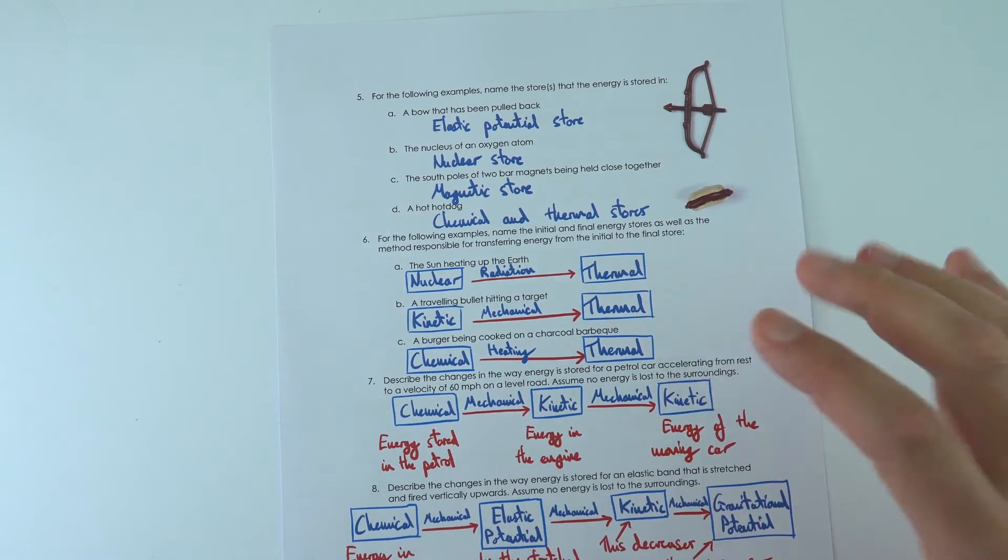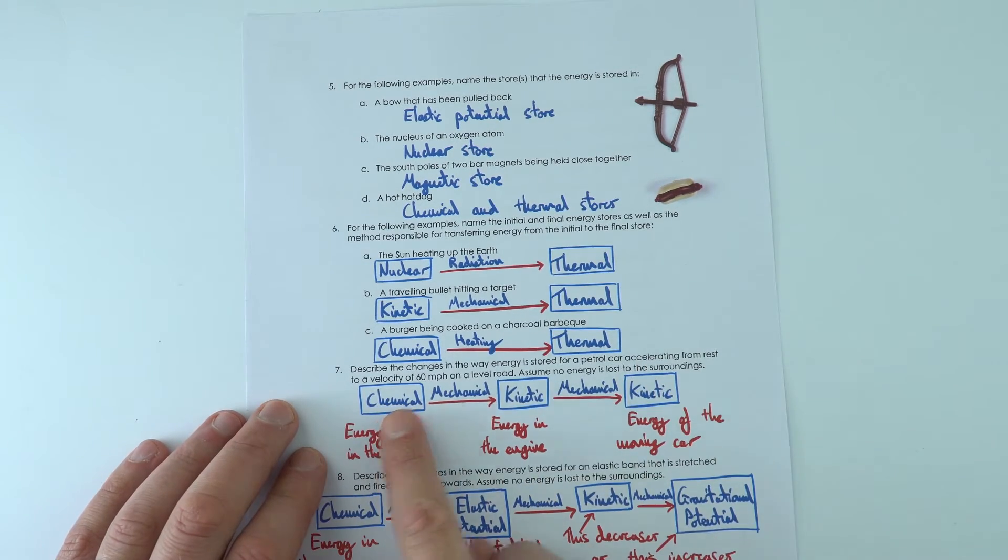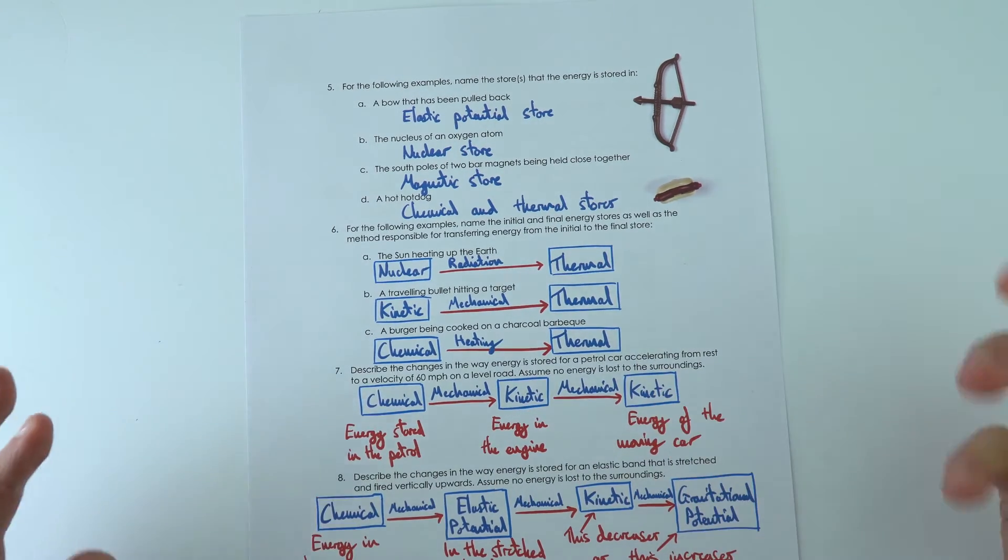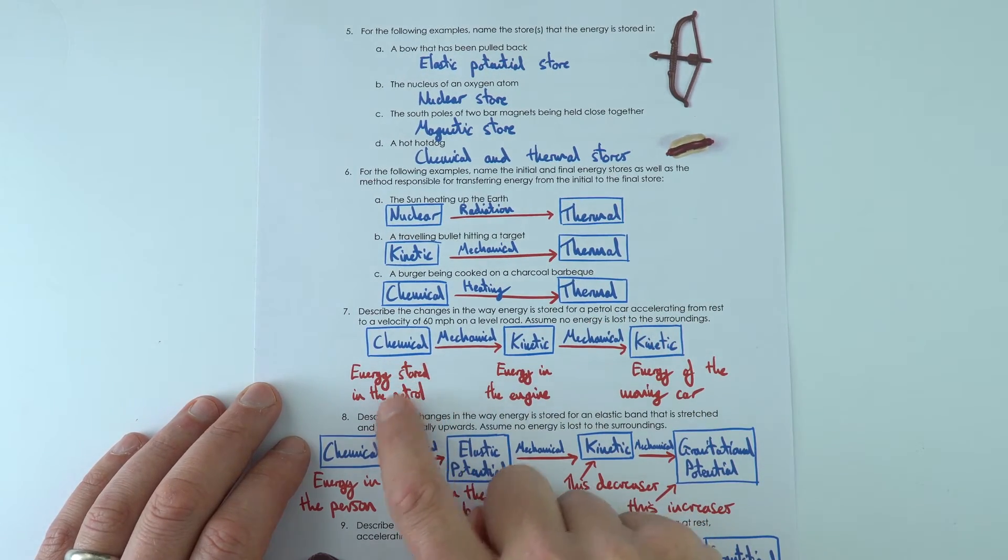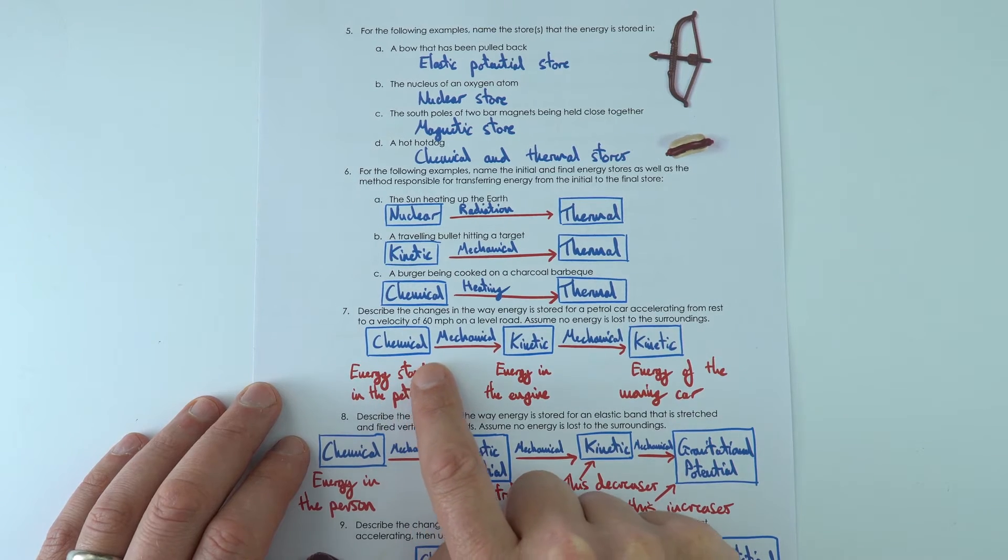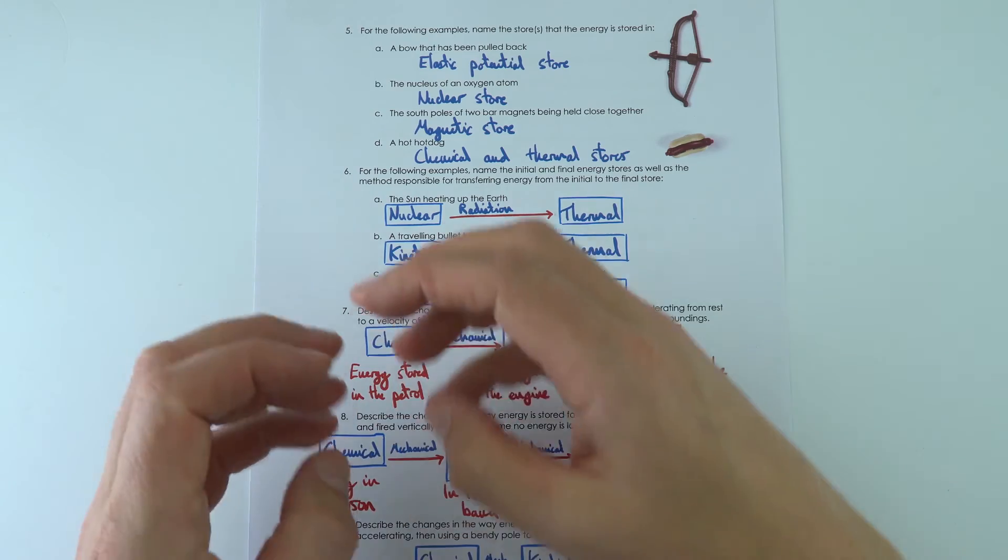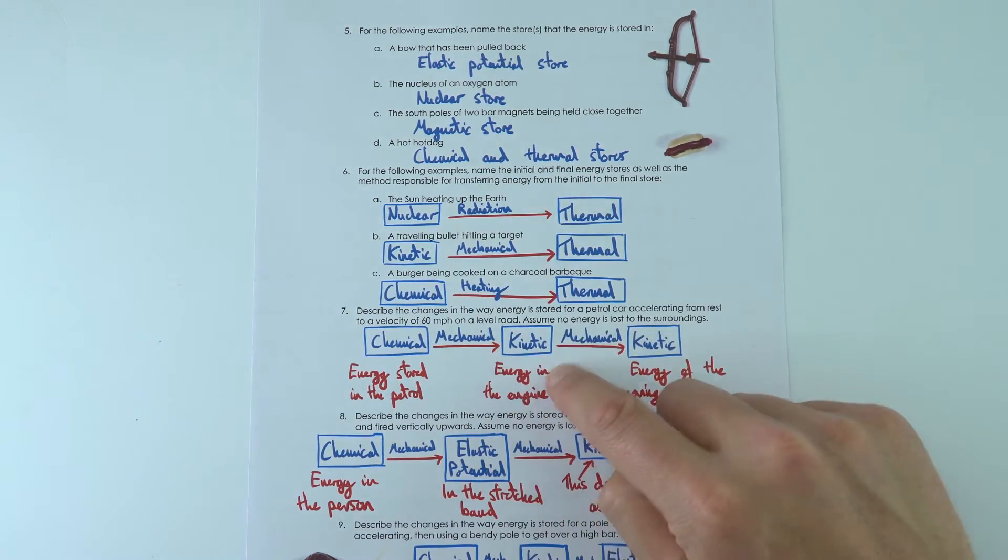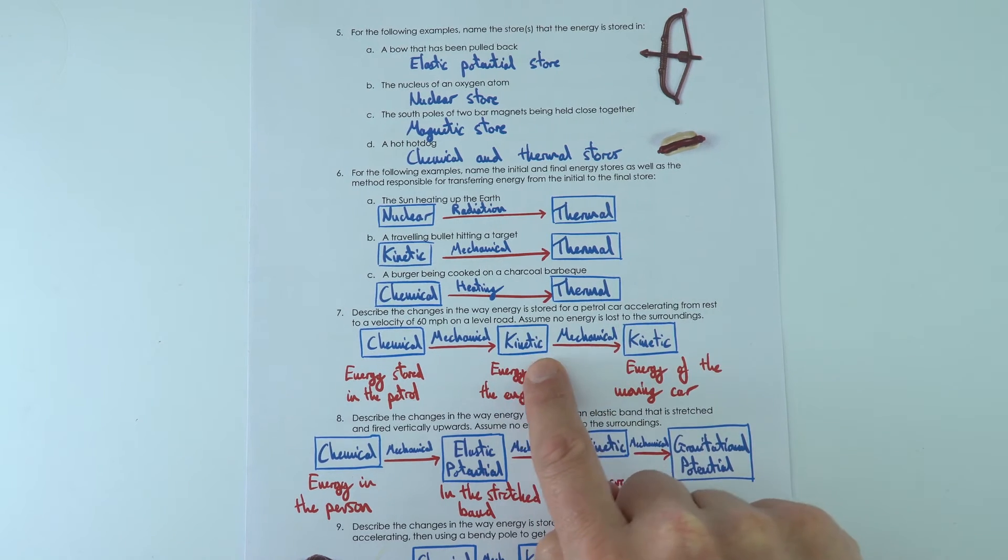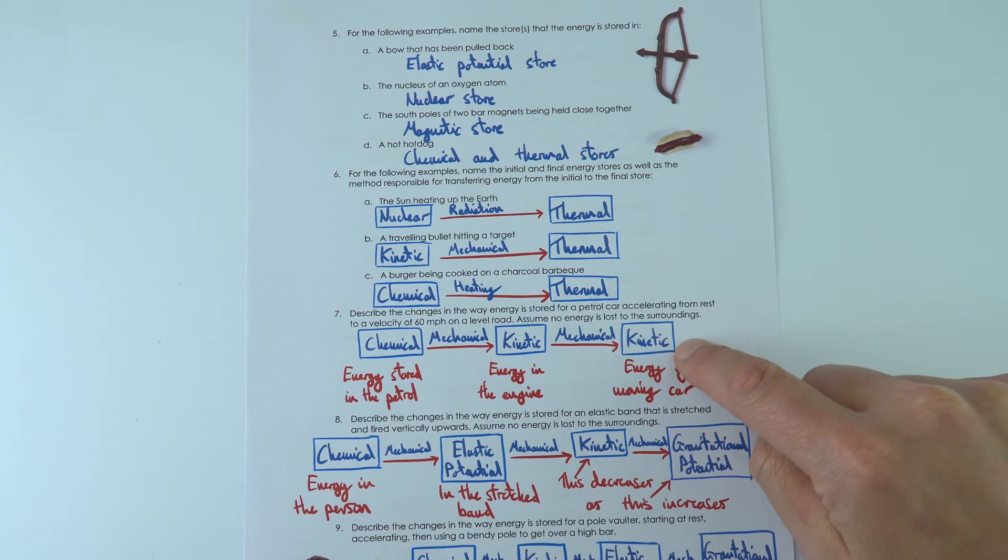And then this next one over here shows actually in real life, depending where you start and end, there might be several different stores. And I described for the car for example, that because it's a petrol car, we've got the chemical energy stored in the petrol. This is then due to combustion, and then there's going to be a force, when it's burnt there's going to be a force acting over a distance, which causes the pistons in the engine to move, then the engine starts rotating, and this is then transferred mechanically, again using forces, increasing the kinetic store of the moving car.